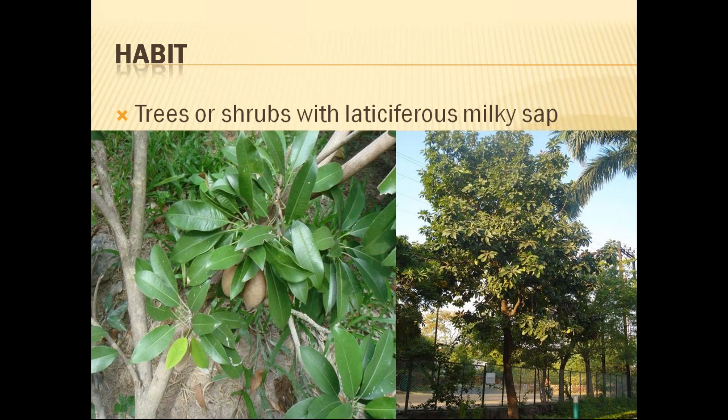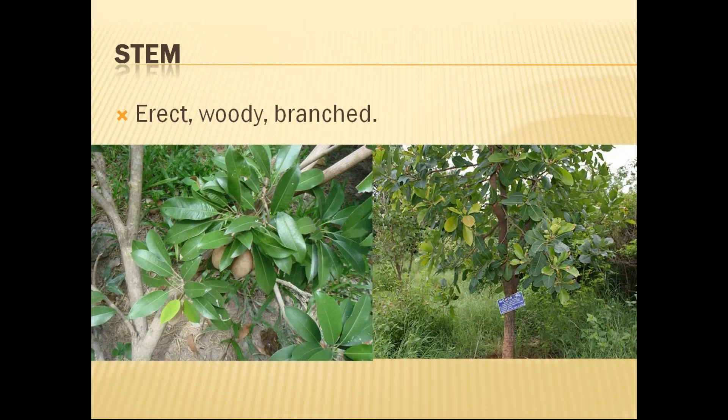The stem is erect, woody, and branched. The smooth white-colored stem is visible in the photograph — we get a smooth stem in this particular family. Generally there is no dead bark; stem is smooth in this family.